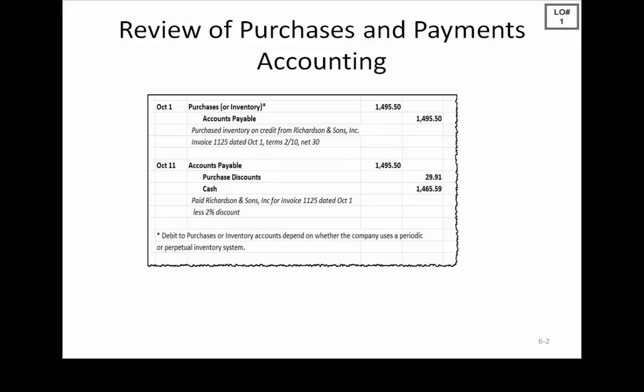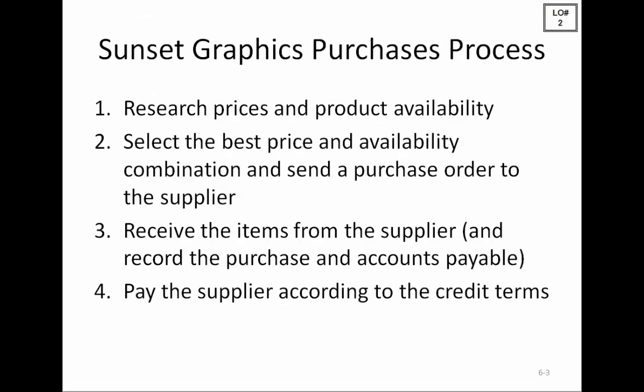We record purchase discounts for $29.91 and we credit cash for $1,465.59. Now for Sunset Graphics, their purchases process involves first researching prices and checking for product availability.